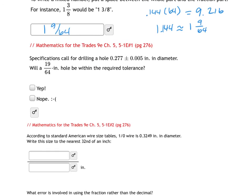So then if they're asked to determine whether or not if I drill a hole with a 19/64th hole, will it be within the required tolerance? So I need to know if I have 0.277 plus my tolerance. So I have 0.277. I'm going to add to it 0.005.